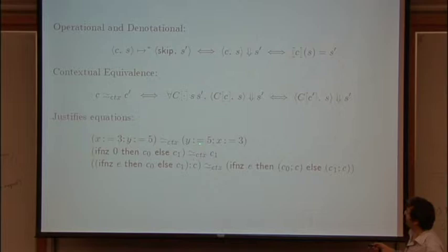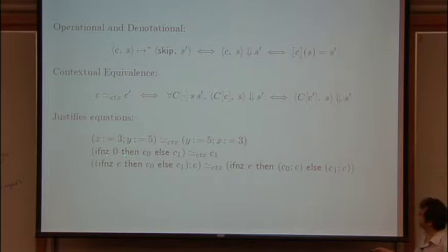And for example, things that come from the reduction semantics as well. So if you have a conditional test on zero, then you know that this thing is going to be contextually equivalent to the second branch.